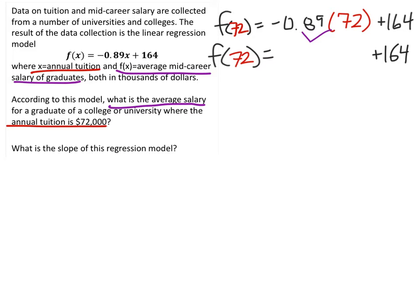negative 0.89 times 72 is negative 64.08. If you're confused by that, go ahead and just type it into a calculator. And from there, we'll just add that 164, and that gives us 99.92. Now remember,